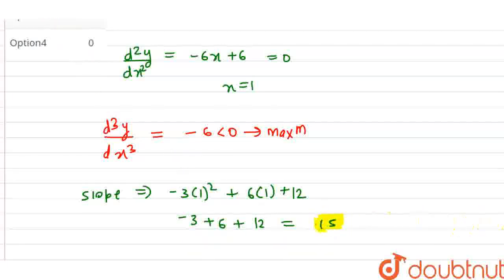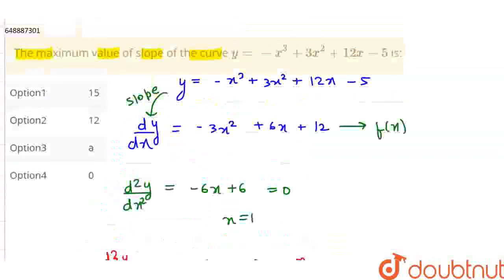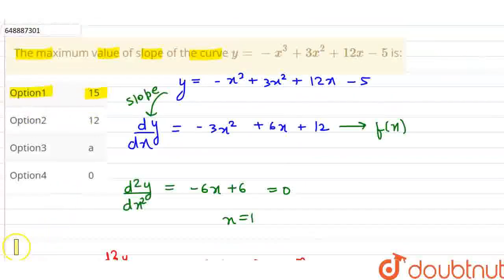So the answer is 15. So the slope will have maximum value of 15. Which option will be correct? Option number 1 is the answer. Okay, thank you friends.